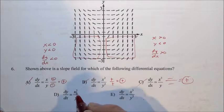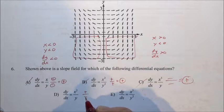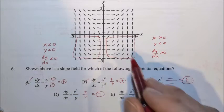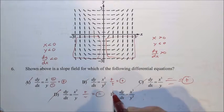If we go to option D, x is positive. Positive squared is a positive. Y is negative. A positive divided by a negative is a negative, but all the slopes are positive. So this one's out. And lo and behold, E is our answer.